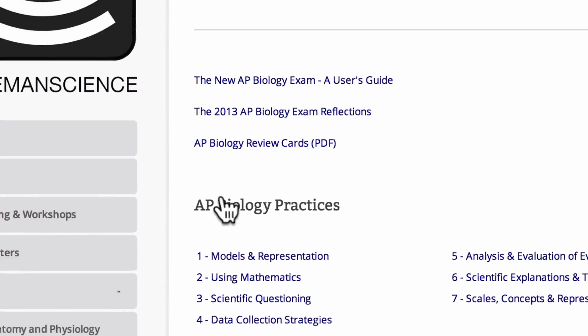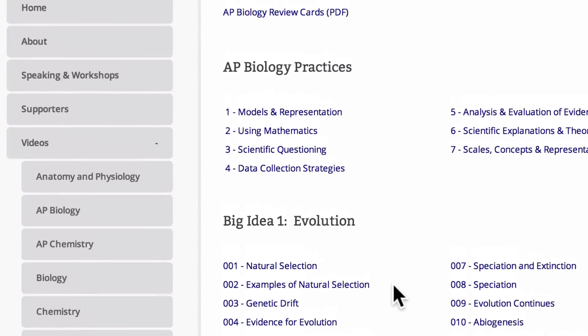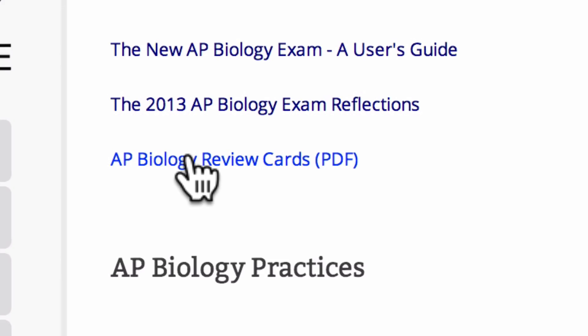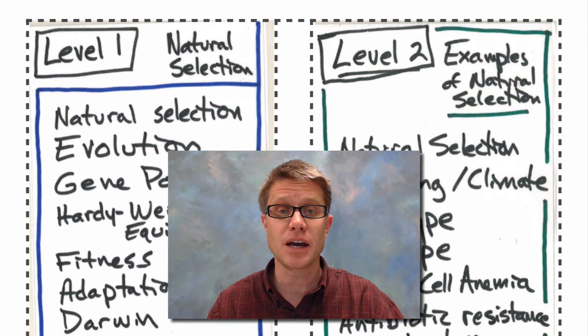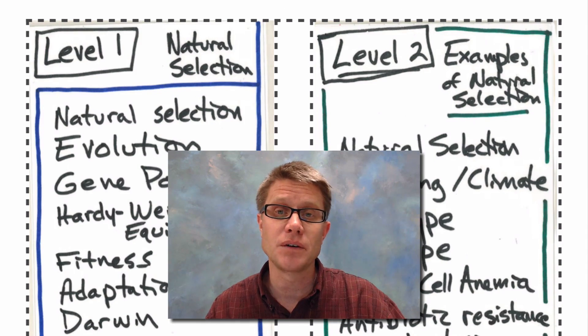You'll see all the videos—the 55 videos are organized. If you look at the top, there's the AP Biology review cards. You can click on that and there's a PDF with all 55 of them.